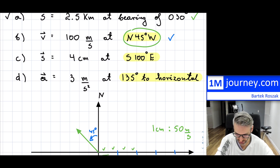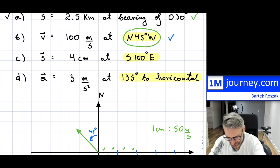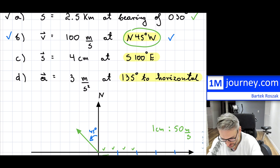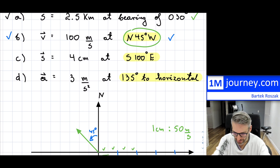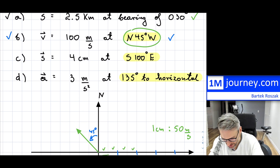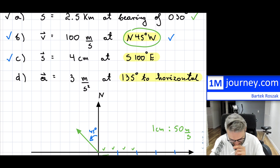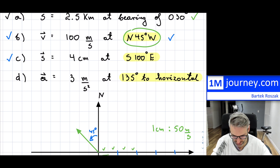So there you go — you've now graphed the second one, and this is based on the quadrant bearing. The first one was on the true bearing. That's part B. Now part C — this one is another displacement vector.